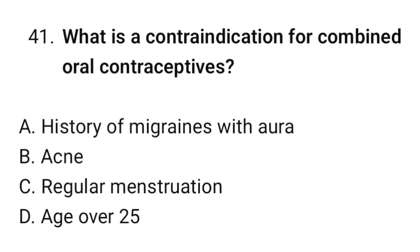Question No. 41: What is a contraindication for combined oral contraceptives? The correct option is A. History of migraines with aura.